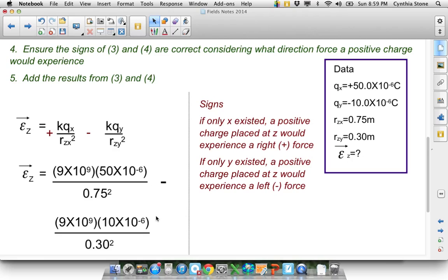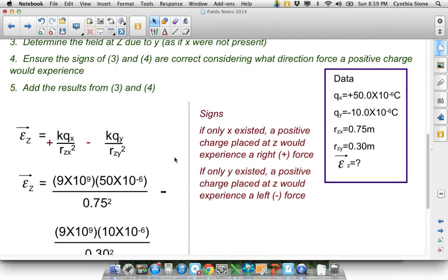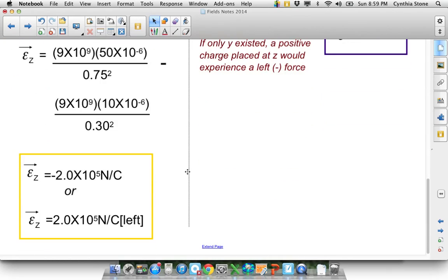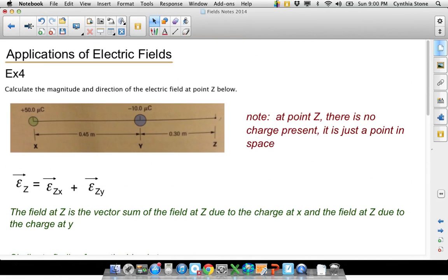Stick in the numbers. Notice the distance, by the way. Don't get fooled by that. The distance from Z to X is 0.75. Sub in the numbers and you get your answer. It turns out that it would move to the left, so the closeness of Y sort of overcomes the large charge at X because it does want to move to the left. And again, it's a big number, which I've told you there are often big numbers like that. See how I put it in, 50 times 10 to the negative 6. That's that micro-Coulomb business. That's a hard one.